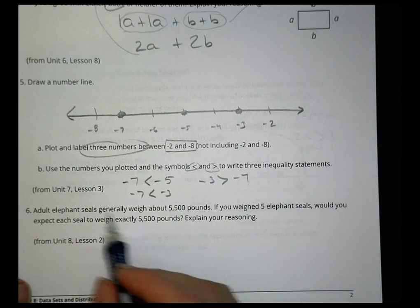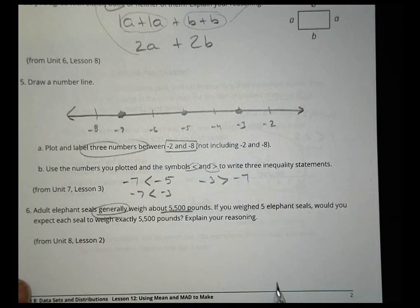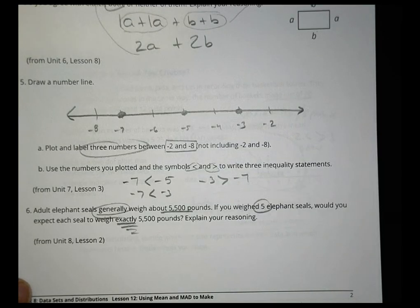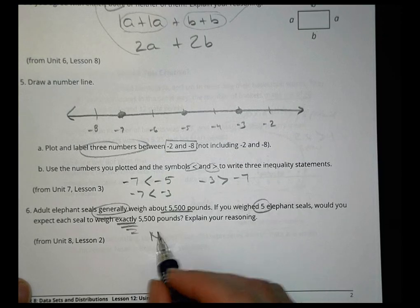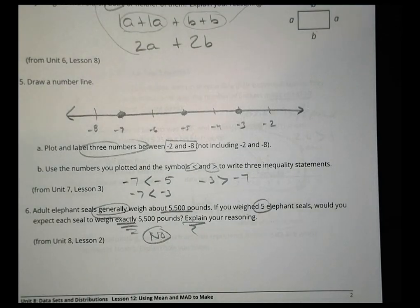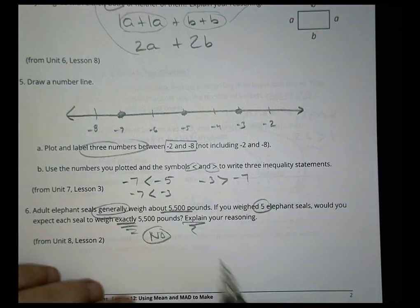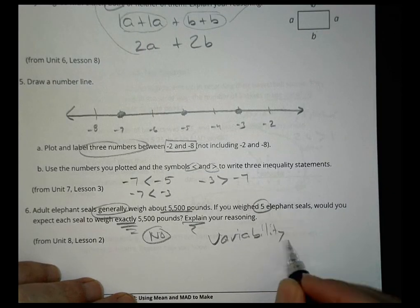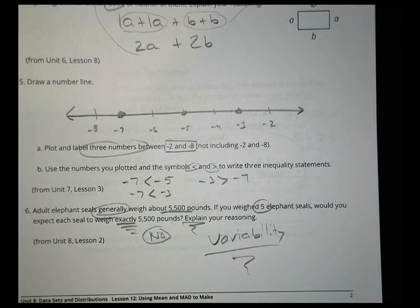Adult elephant seals generally weigh about 5,500 pounds. If you weighed five elephant seals, would you expect each seal to weigh exactly that amount? No — the chances that all five random seals would weigh the exact same amount is not very likely. There is going to be some variability in your measurements. That is always going to be the case. All right, that's it for today. Have a great day — we'll see you next time.